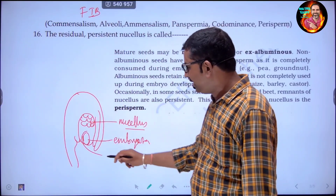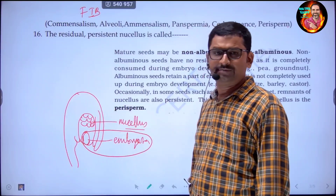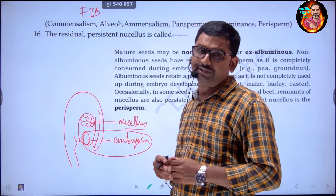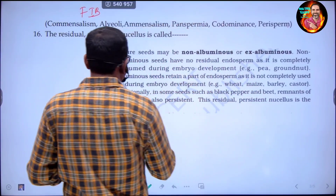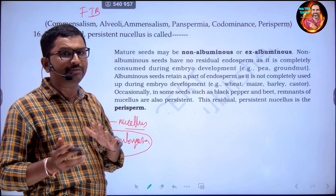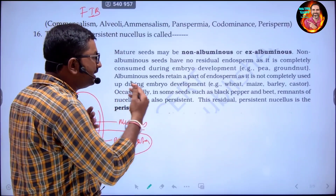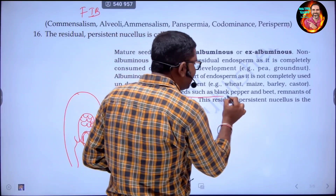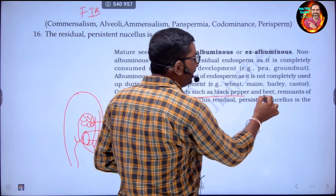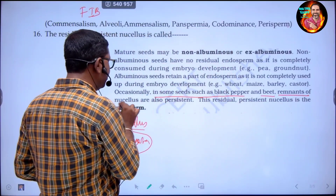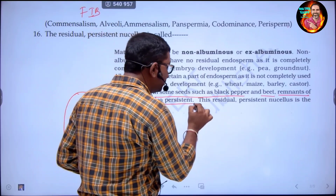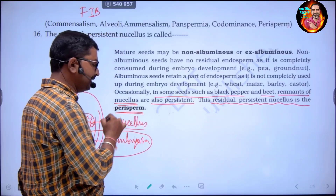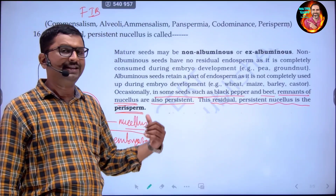After fertilization, there will be changes in the embryo sac as the seed is formed. Seeds can be albuminous or non-albuminous. In some seeds, especially like black pepper and beet, remnants of the nucellus are also persistent. This residual persistent nucellus is called perisperm. This is the NCERT statement.